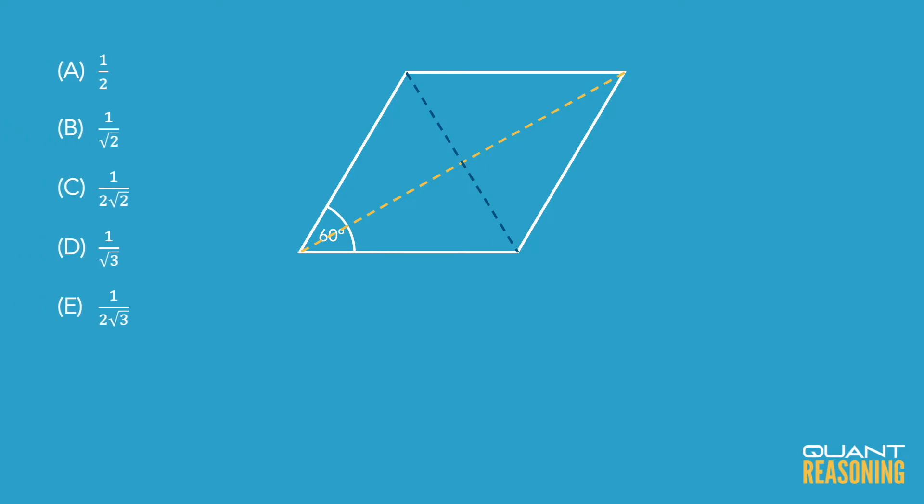Based on that — and this is just a guess based on what it looks like to my eye, so definitely not foolproof — I would probably eliminate A, C, and E, because they're all suggesting that the longer diagonal is at least twice as long, if not even more than that, compared to the short diagonal.